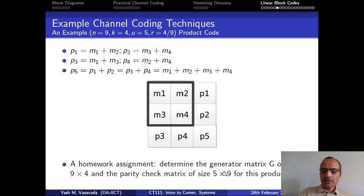Okay, so this is the product code example for the specific case when k is equal to 4 and therefore n is equal to 9. Now, obviously other values of k and n are possible, but because we are restricting k and n both to be perfect squares, the overall arrangement looks like what is shown here.